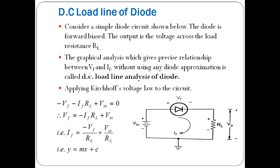We are considering a simple forward-biased diode circuit. The applied voltage is VIN, with the positive terminal of the battery connected to the positive terminal of the diode. The voltage drop across the diode is VF, the drop across the load resistor is V0, and the current flowing through the diode is IF. This graphical analysis gives a more precise relationship between voltage VF and current IF without using any diode approximation — this is called DC load line analysis of a diode.